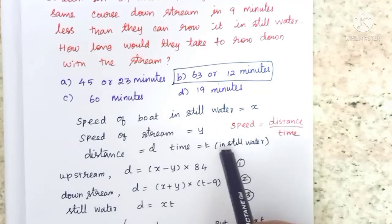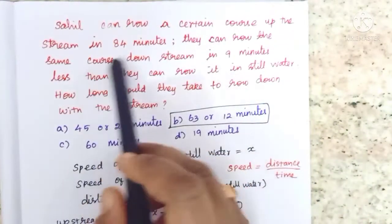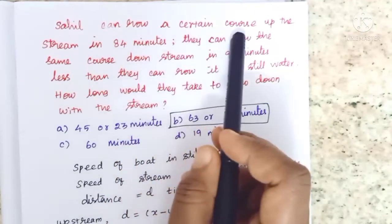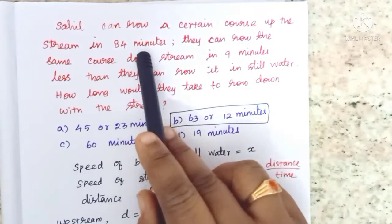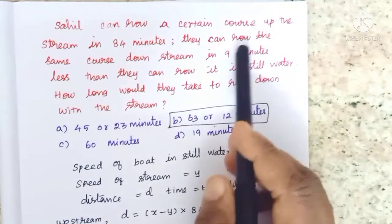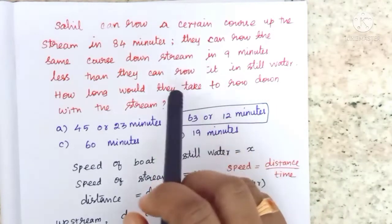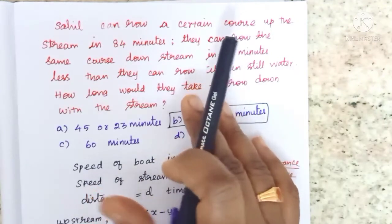Time taken in still water: speed equals distance by time. Upstream means rowing opposite to the current. When going in the opposite direction, speed will decrease.